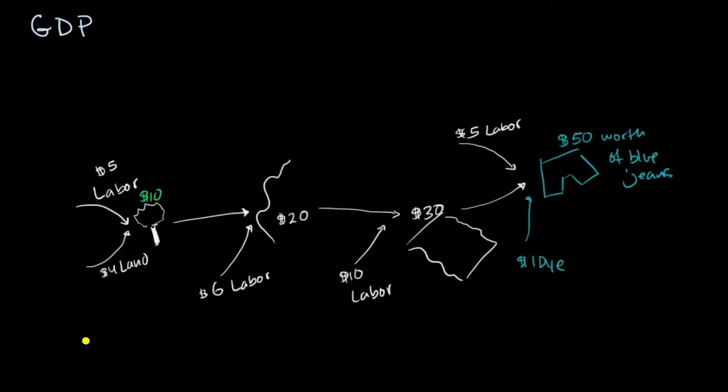And so assuming all of this happened in one year, in the time period that we're measuring GDP for, then we would just count the $50. If we're looking at the final market value or the market value of final goods and services, you would say the GDP, at least for this component of the GDP from these jeans, is $50.